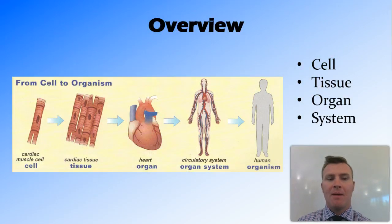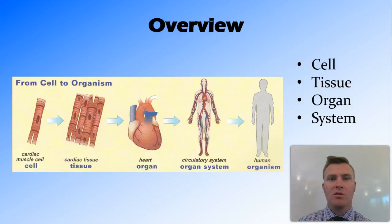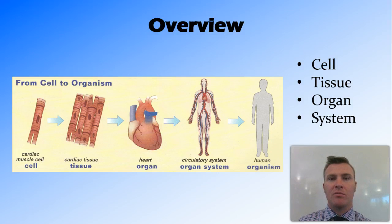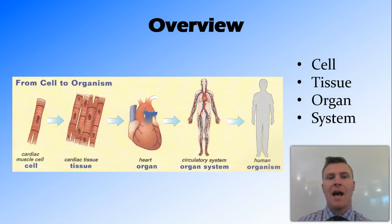To recap: we have differentiated cells — cells that have different roles. Many cells go together to form tissue. A number of different tissues go together to form an organ. A number of different organs form an organ system. And all those systems together form an organism.